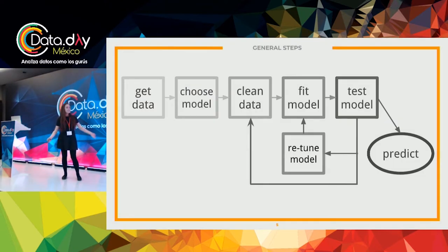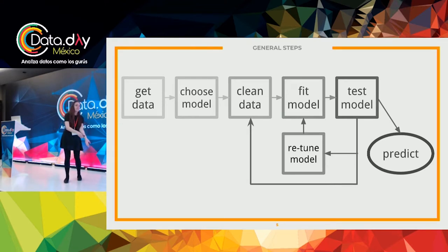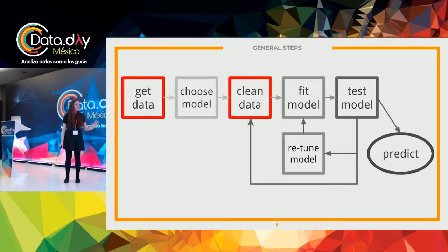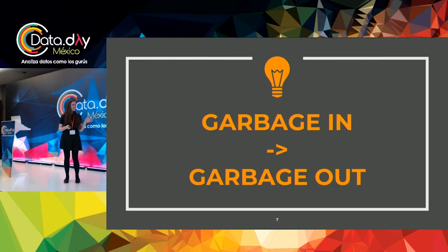Here are the general steps of your machine learning project — the ones you walk through any time you want to create a project. You're going to get your data, choose a model, fit your model and test it. If it's great, cool. If it doesn't work, retune it, clean your data again. Going forward, the two I consider most important — and the ones you spend the most time on, and are least likely to be completely automated out within five years — are getting data and cleaning data. The mentality is: garbage in, garbage out. If your data going in is baloney, your model is baloney, no matter how much you tune it.